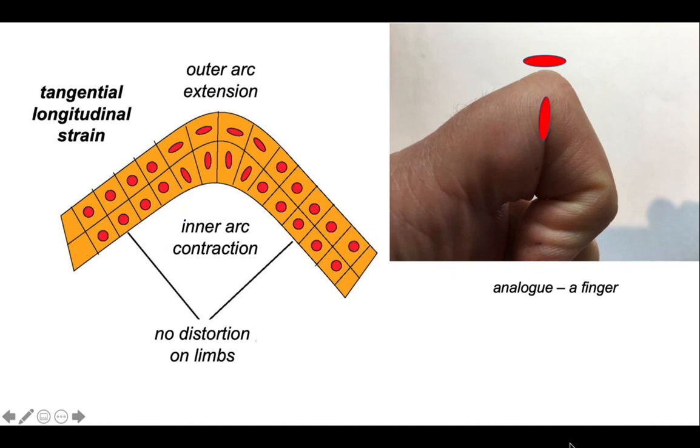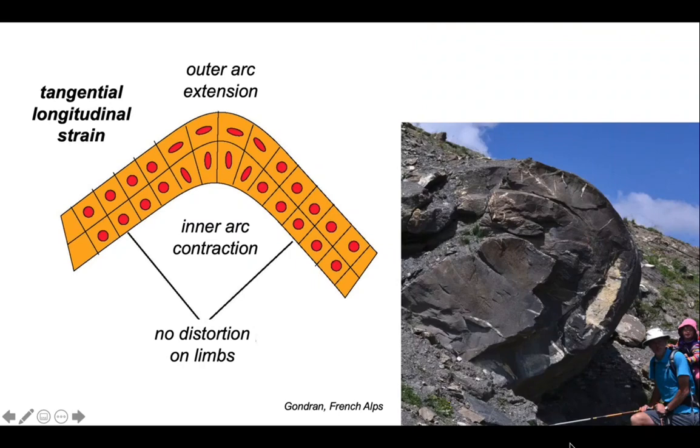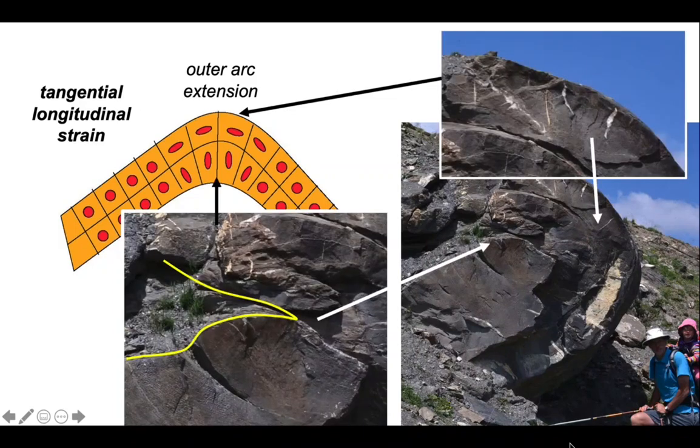And it's a good job your fingers work like this. And you see these relationships in nature. So here's a recumbent fold. The hinge is running into the hillside. And if we zoom in, we can pick out the outer arc stretching because of those white veins which have cracked the bedding. And then if we look at the inner arc, we can see that it's pinched in, implying layer contraction.